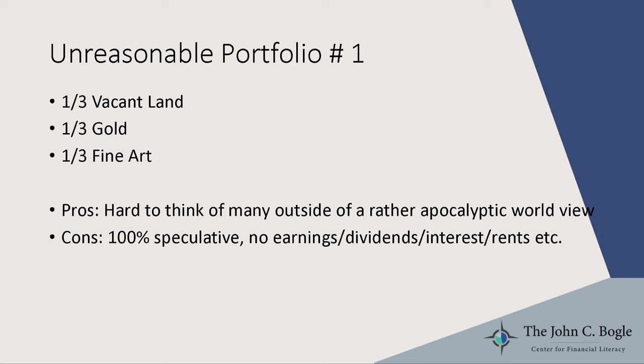Unreasonable portfolio number one: one-third in vacant land, one-third in gold, one-third in fine art. Outside of a very apocalyptic worldview, I can't really think of any pros. This portfolio is 100 percent speculative — you're getting no earnings, dividends, interest, or rents. Nothing is coming out of this portfolio other than hoping somebody else will pay you more for the assets than you paid for them.